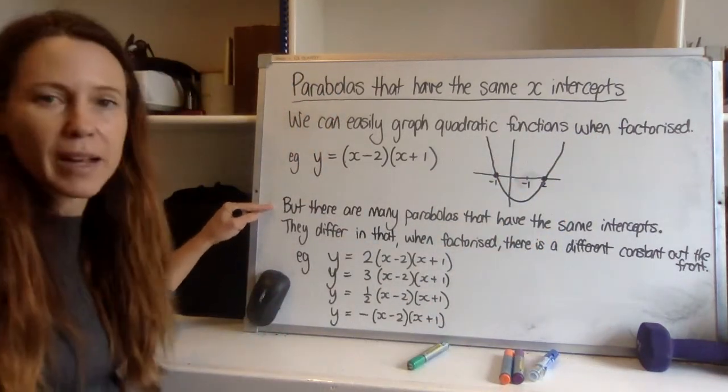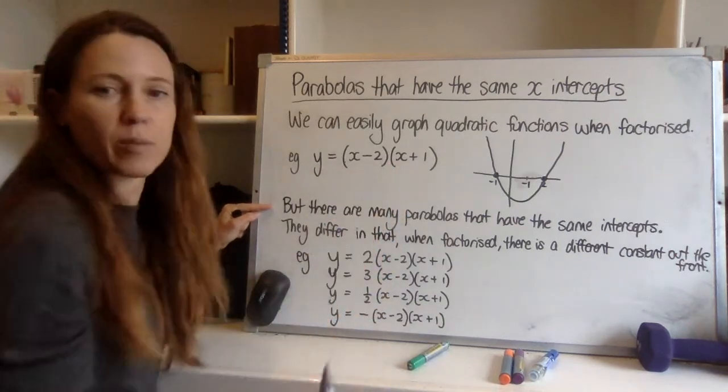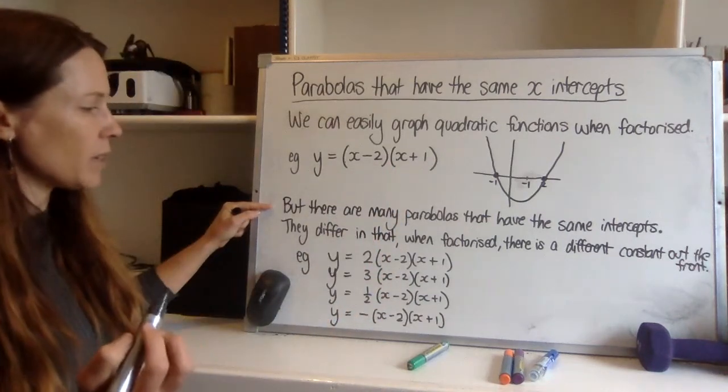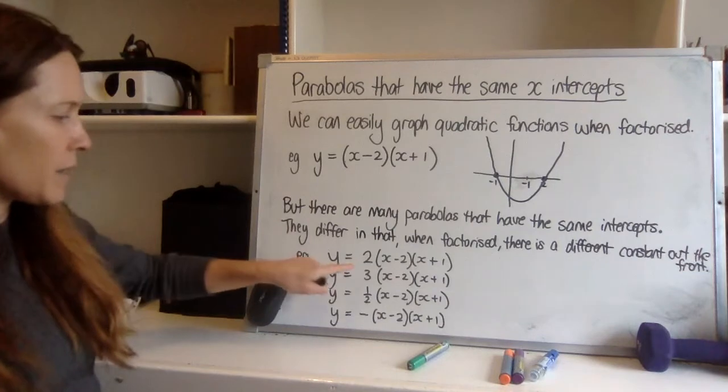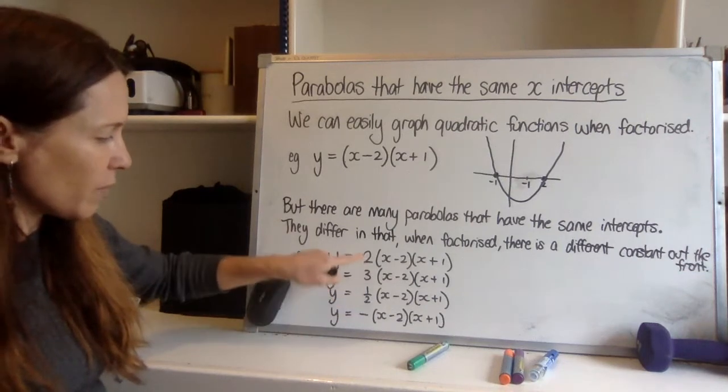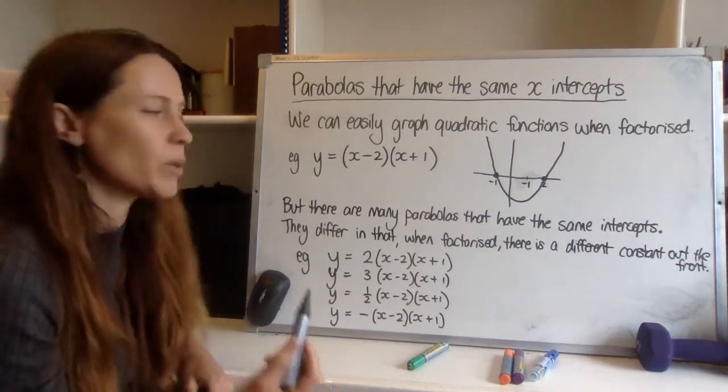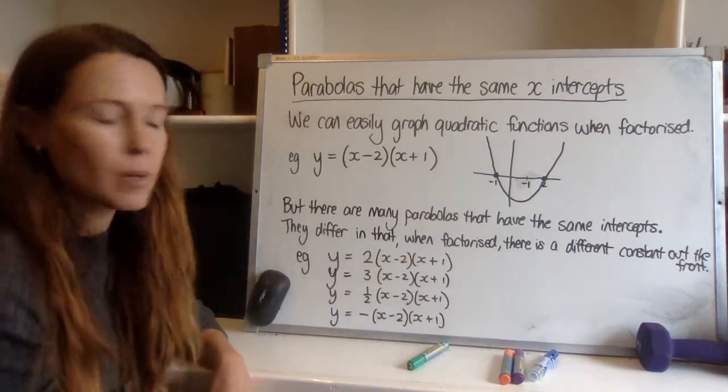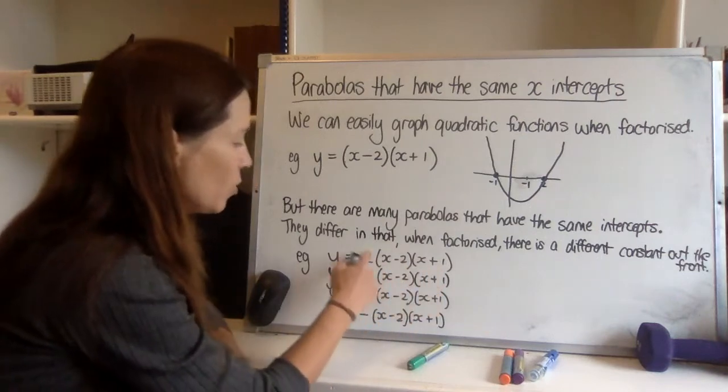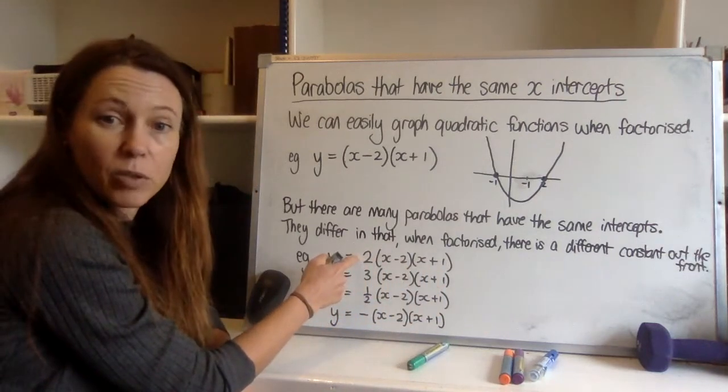But there's lots of other parabolas that have the exact same intercepts as this one. Now they only differ in that when we factorize them there's a different constant out the front of the brackets. Now when you expand this out you can see that it's also then going to give you a different y-intercept, isn't it? Because you won't get negative 2, you'll get it in this case multiplied by 2, it would be negative 4.